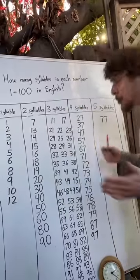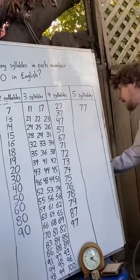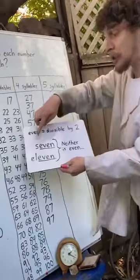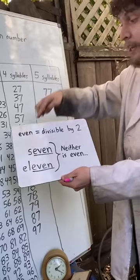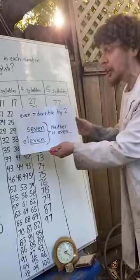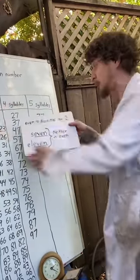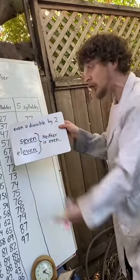Now, what do they do with that extra space they're taking up? They spell out even. Even means divisible by two, which they're not. So why do they use up all that extra space to spell out something they're not?